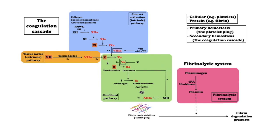Both the contact pathway and the tissue factor pathway feed into and activate the common pathway. The coagulation factors circulate as inactive enzyme precursors which, upon activation, take part in the series of reactions that make up the coagulation cascade. The coagulation factors are generally serine proteases.